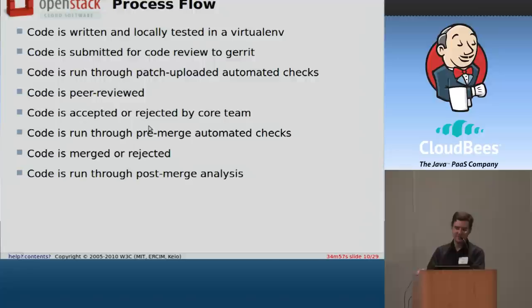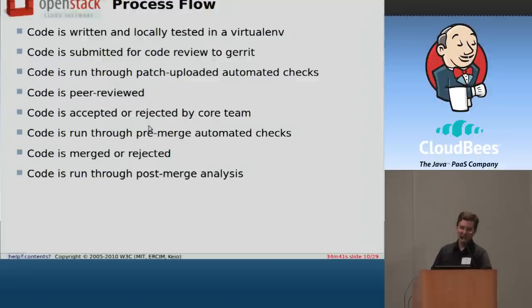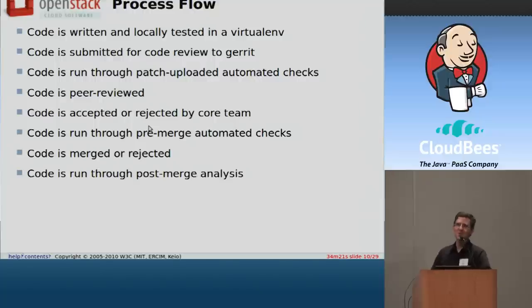OpenStack is a Python project, so developers set up a virtual environment, which is Python's way of downloading all the libraries you need to develop with. You develop your code in a virtual environment, and ideally you'd run the test suite on it. But honestly what we're seeing is developers are getting more and more comfortable with Jenkins running the stuff for them. Since the test suite is kind of slow, oftentimes they'll just commit it and push it up and see what happens.